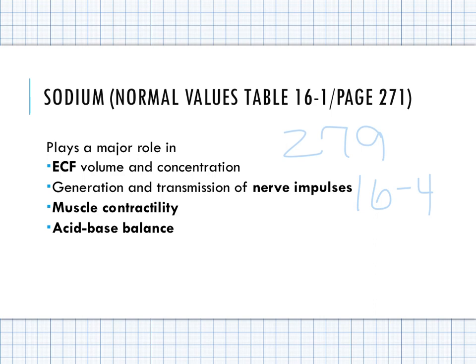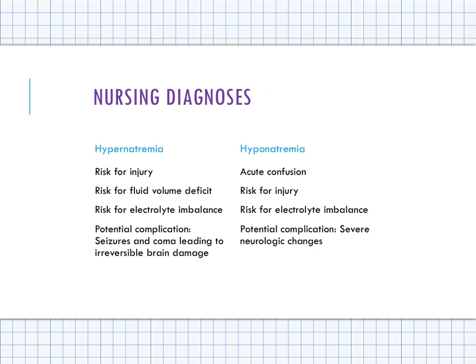Nursing diagnoses for hypernatremia include risk for injury — associated with seizure activity — risk for or actual fluid volume deficit, and risk for or actual electrolyte imbalance. Concerns include seizures, coma, and possibly irreversible brain damage. For hyponatremia: risk for actual electrolyte imbalance, risk for injury due to declining level of consciousness or seizure activity, acute confusion due to altered sodium level, and potential complications with severe neurological changes.